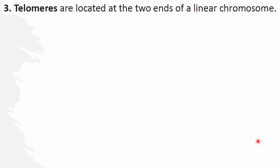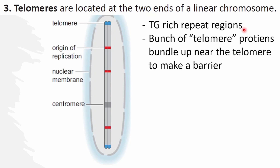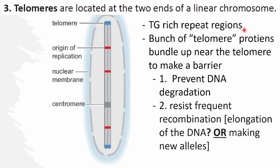Three — telomeres. Look at the two linear ends of the chromosome. This is really important. Basically located on the ends — these regions are TG-rich regions, so nucleotides G and T. Very important. They repeat a lot. So this point is basically about how the telomere attracts telomere proteins and different proteins, and basically bundles it up at that end. This is mainly to prevent DNA integration. Basically, if there's nothing to protect the ends, it prevents DNA from being split apart by helicase or anything like that. And this is meant to resist frequent recombination — elongation of the DNA makes it more susceptible to being cut or destroyed or making linear alleles. You don't want any genetic problems.